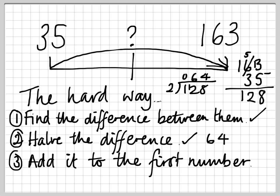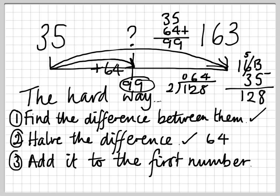Then we have to add that to the first number, so that will take us to halfway when we add on 64. Up here, 35, 64, that makes 9, that makes 9. Halfway is 99. That's my old hard way.